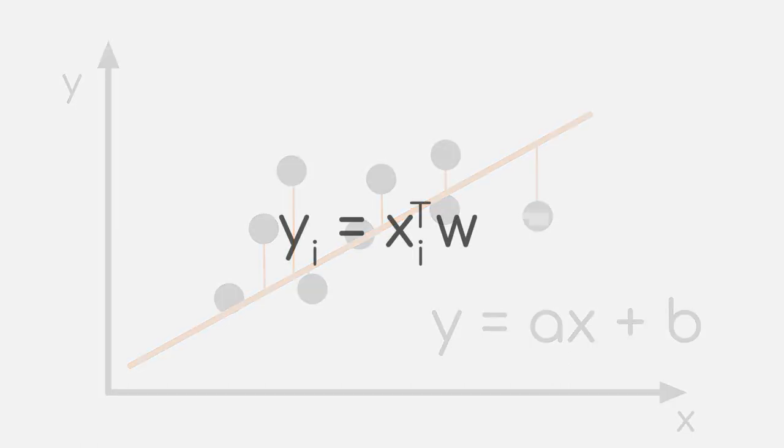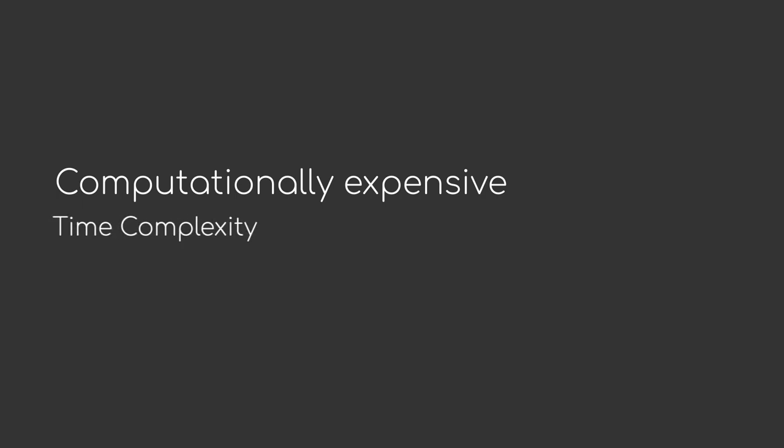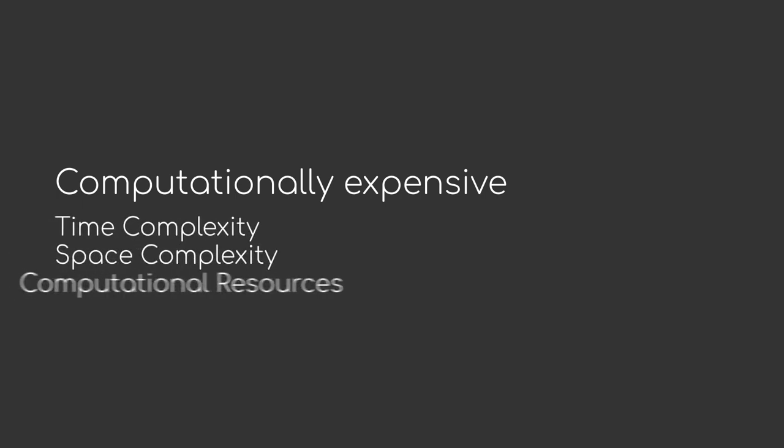For linear regression, we use the dot product between a weight vector and the vector of the data point to compute the corresponding prediction. Now, we could keep doing this and just apply our feature maps onto the vectors and then calculate the dot product. Unfortunately, however, this is rather computationally expensive for most real-world scenarios.